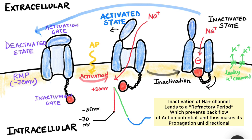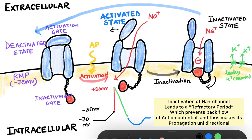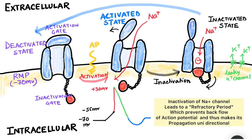As the cell potential drops, it goes into hyperpolarization, and the inactivated state goes back into the deactivated state, where the activation gate closes and the inactivation gate opens up, leading to net closure of the channel. This process is known as de-inactivation. So this is, in brief, the idea of the functioning of voltage-gated sodium channels.